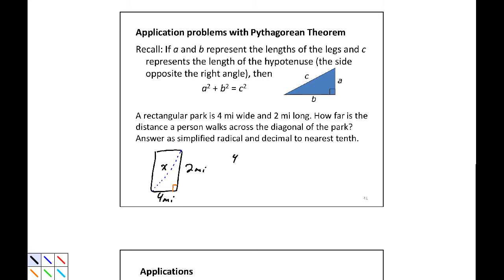So this would be 4 squared plus 2 squared equals x squared. 4 squared is 16, 2 squared is 4, so 20 equals x squared. Now if we take the square root of both sides, the positive root is the only one that we care about here, so I'm going to ignore the plus or minus. I have x equals the square root of 20.